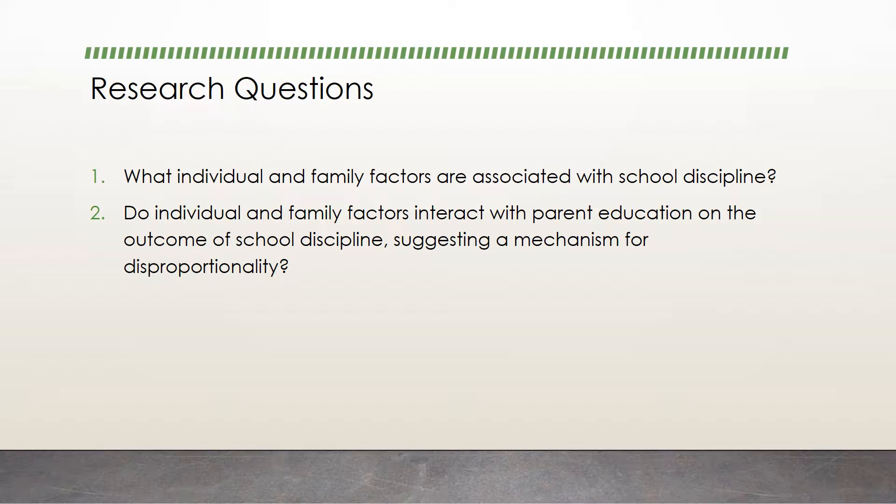The study answers the following questions: What individual and family factors are associated with school discipline? Do individual and family factors interact with parent education on the outcome of school discipline, suggesting a mechanism for disproportionality?